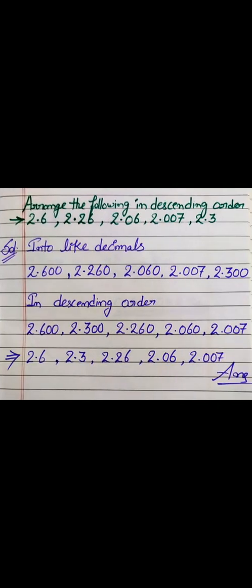Now we have to arrange these decimals in descending order. The same process: first make them like decimals. The maximum decimal places is 3 from 2.007. So 2.6 becomes 2.600, 2.26 becomes 2.260, 2.06 becomes 2.060, 2.007 stays as is, and 2.3 becomes 2.300. Descending order: 2.600, 2.300, 2.260, 2.060, 2.007. Writing original numbers: 2.6, 2.3, 2.26, 2.06, 2.007. This is our final answer.